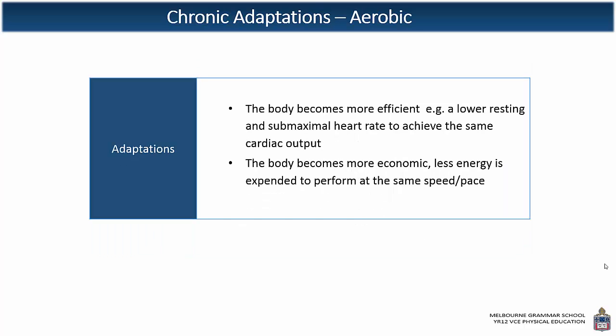When talking specifically about the aerobic system, we want to see the body becoming more efficient. As a result of aerobic training, the athlete is going to have a lower resting and a lower submaximal heart rate to achieve the same cardiac output, and this is due to a greater stroke volume. The greater stroke volume is due to an increase in total blood volume and an increase in the size of the left ventricle — some of the factors tying into that efficiency concept.